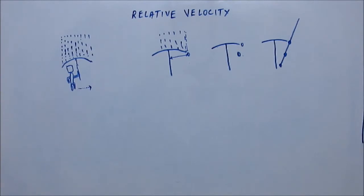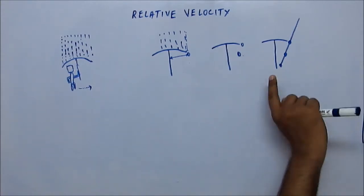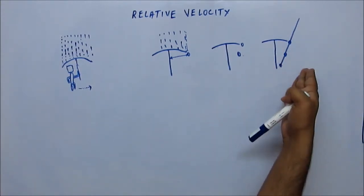That's why the rain would seem to be coming obliquely, because Tom would think that he is stationary and rather the rain drop is coming towards him. In a similar way, when we sit on a vehicle and we see outside, we think that we are stationary and the other objects are moving in opposite direction.